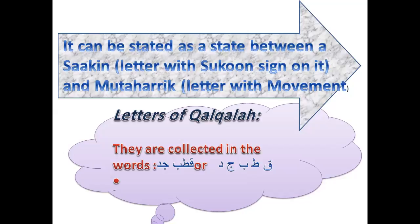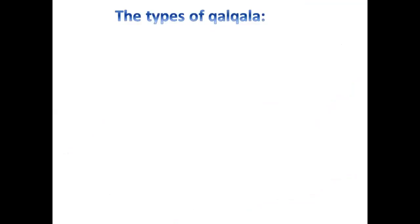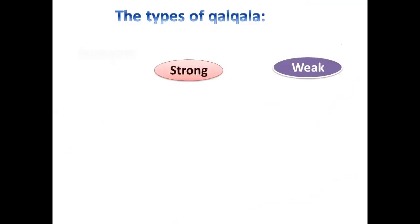The types of Qalqala are three: Weak, Strong, and Strongest.